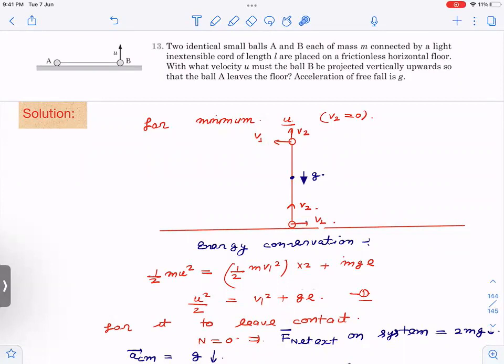From momentum conservation, both velocities are V1, right? Now, first thing which you can see, we can write energy conservation and for minimum U, V2 is equal to zero. So when it is reaching here, it has lost its velocity. So V2 is almost zero.